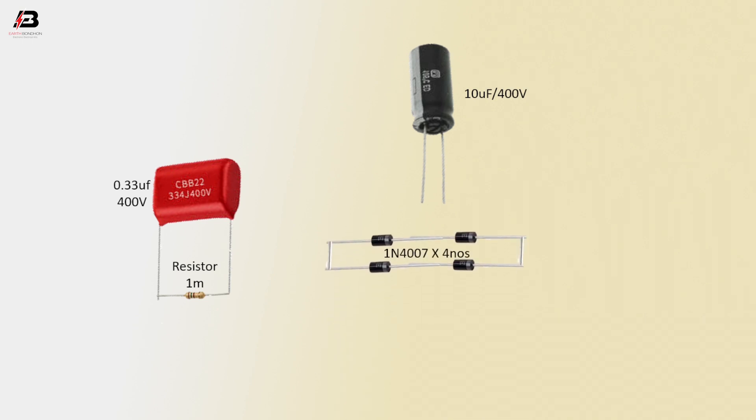1N4007 4 diodes. Phase connection to diode. Neutral connection to diode another point. Neutral connection to capacitor.